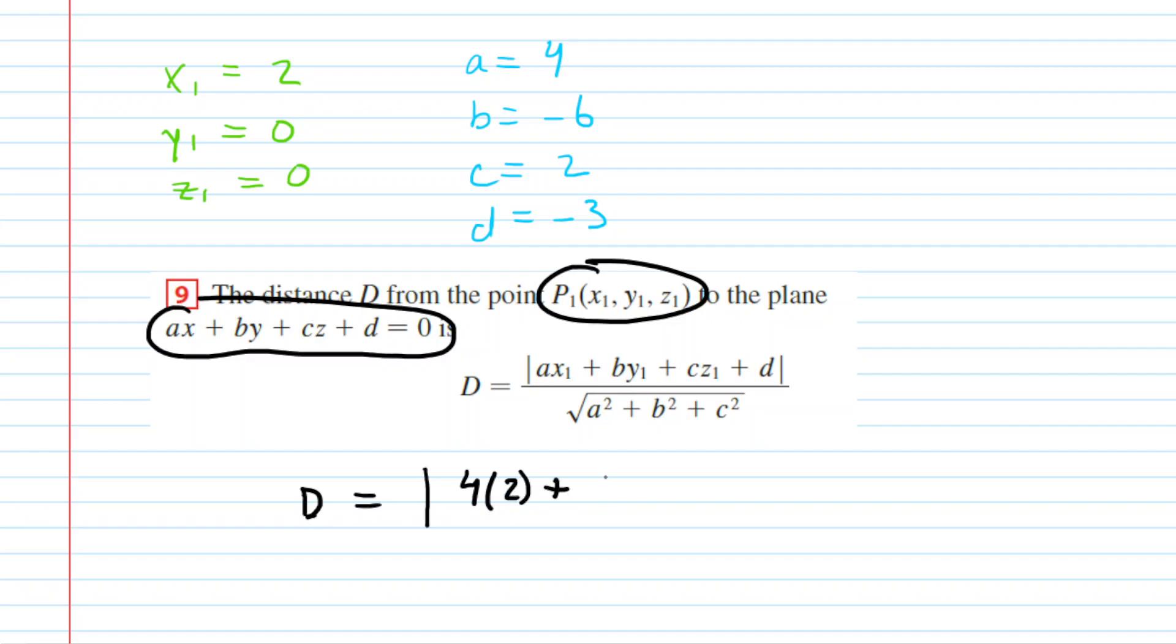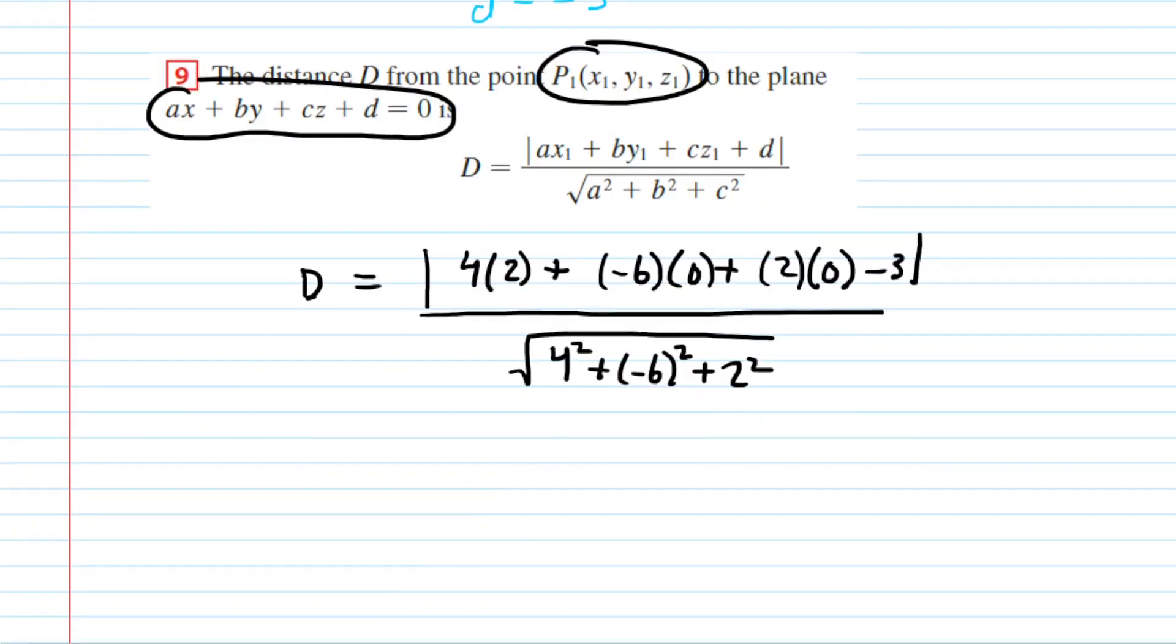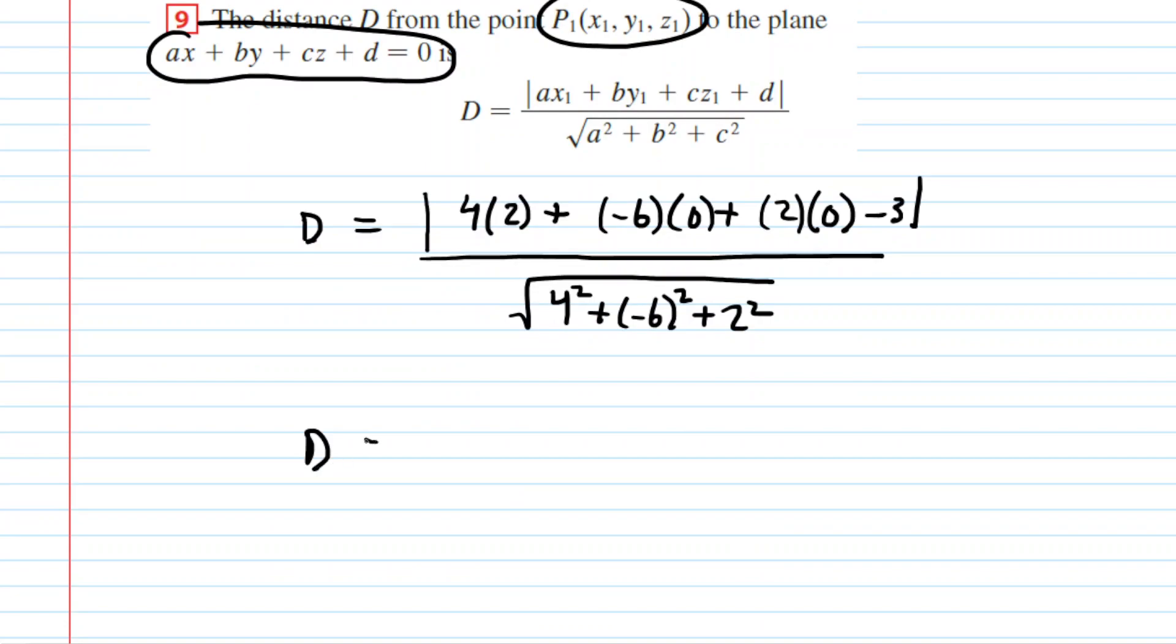plus b, which was the negative 6, times y1, which is 0, plus c, times our z1, and then plus d. We're going to be adding a negative 3. So, that's just minus 3. And then this is all divided by the square root of our a squared plus our b squared plus our c squared. So, that's pretty much it. Now, all we need to do is simplify.